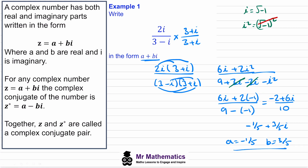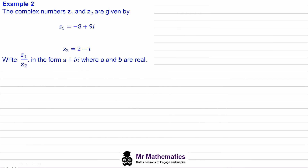In example two we've been told that z1 is negative 8 plus 9i and z2 is 2 minus i. We've been asked to work out z1 divided by z2 and leave our answer in simplified a plus bi form. You may want to pause the video and try this yourself before we go through the worked solution.